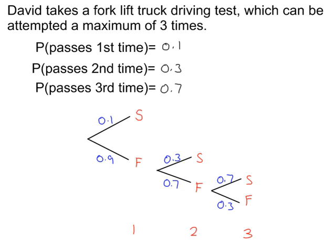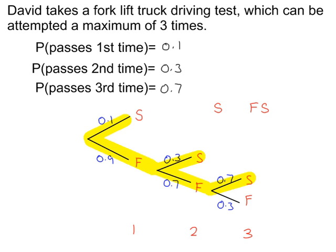So what's the overall probability that he passes? By looking at the tree diagram, he's successful along the path S, or he could fail first and then be successful — FS, or he could fail the first time, fail the second time, and then be successful — FFS. You can work out the probability for each of these paths and then add them together.